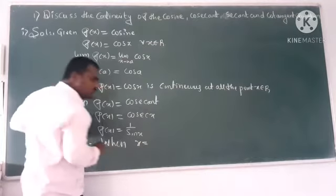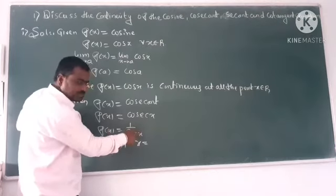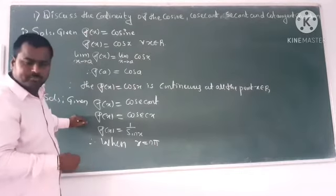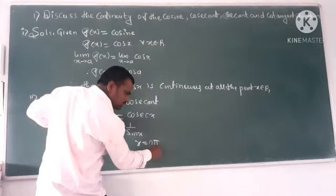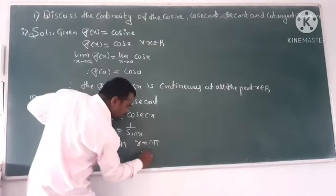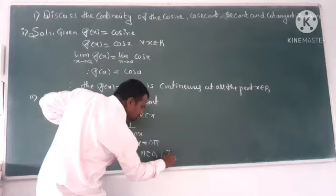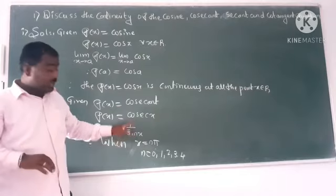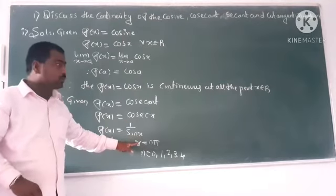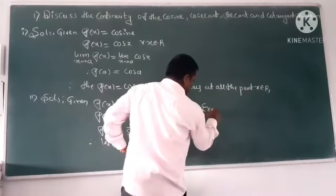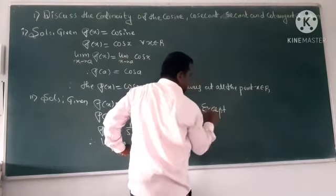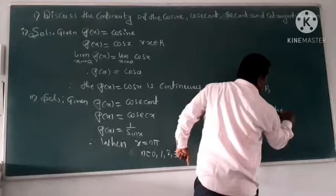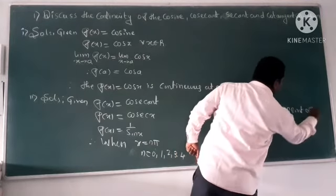When x is equal to n pi, it means theta is expressed for the value. So here n pi, n pi means what? When you are going to take n pi is equal to zero, one, two, three, four, so theta will be, x will be zero. Hence in this, except all these points, except n pi, all the points of x comes to R.